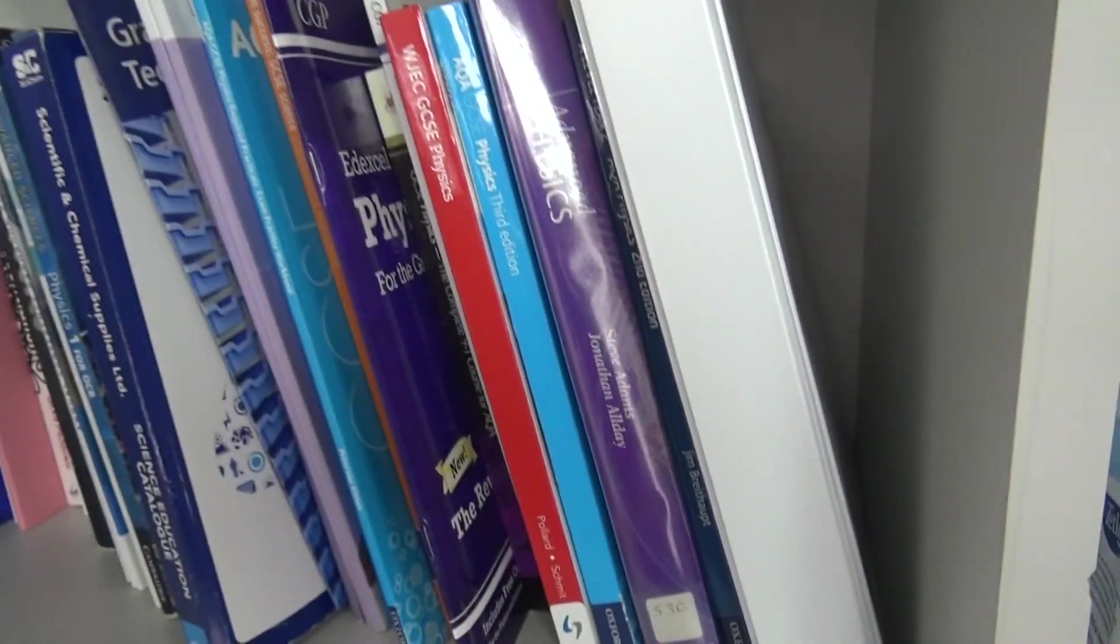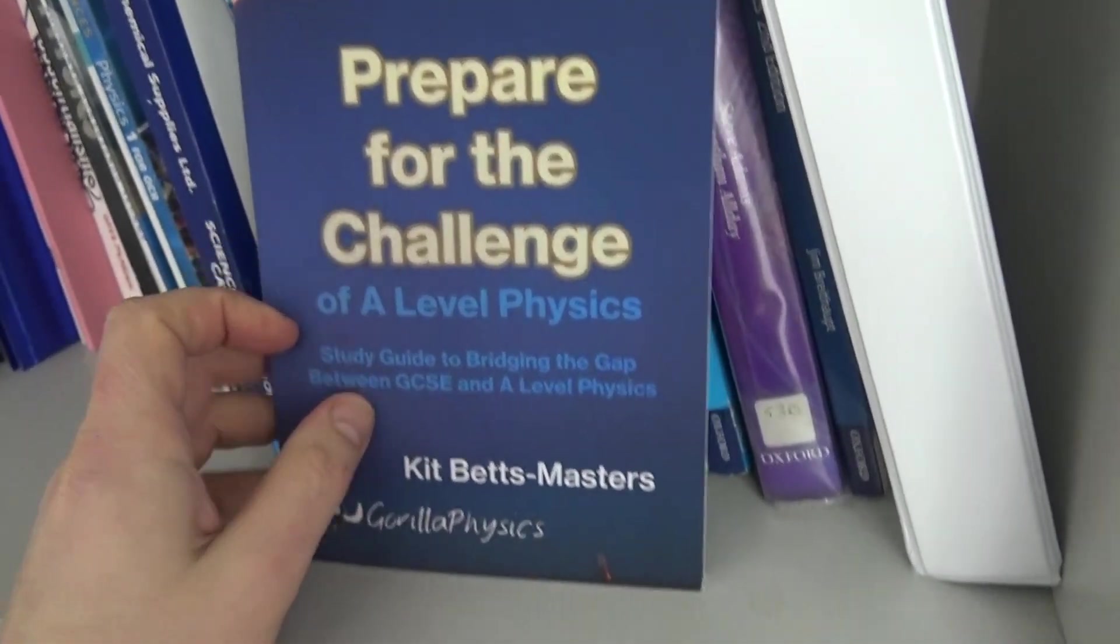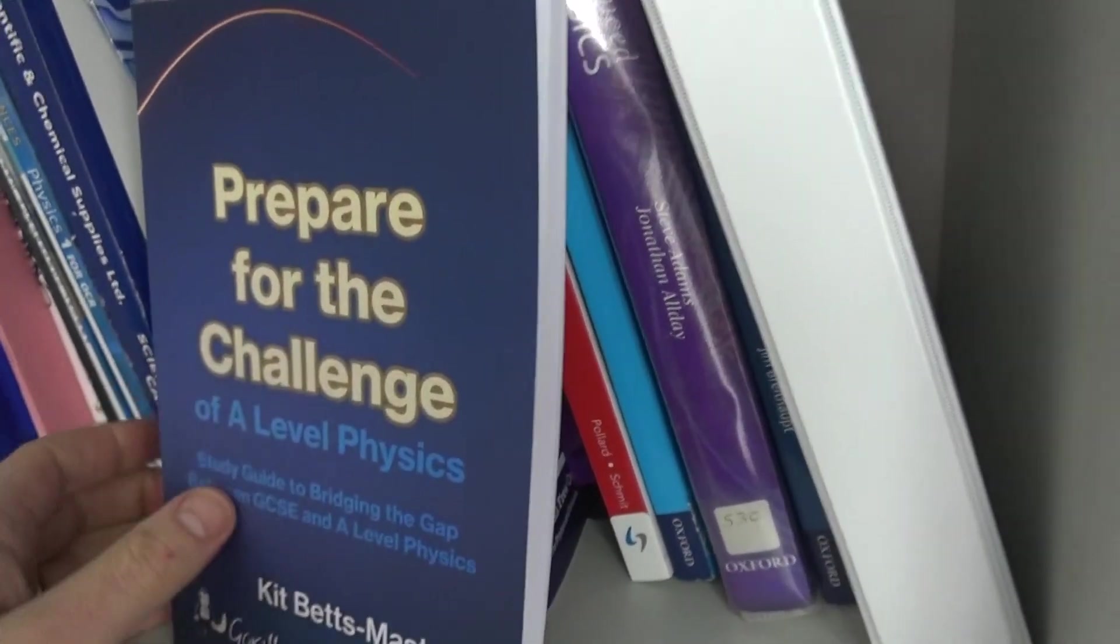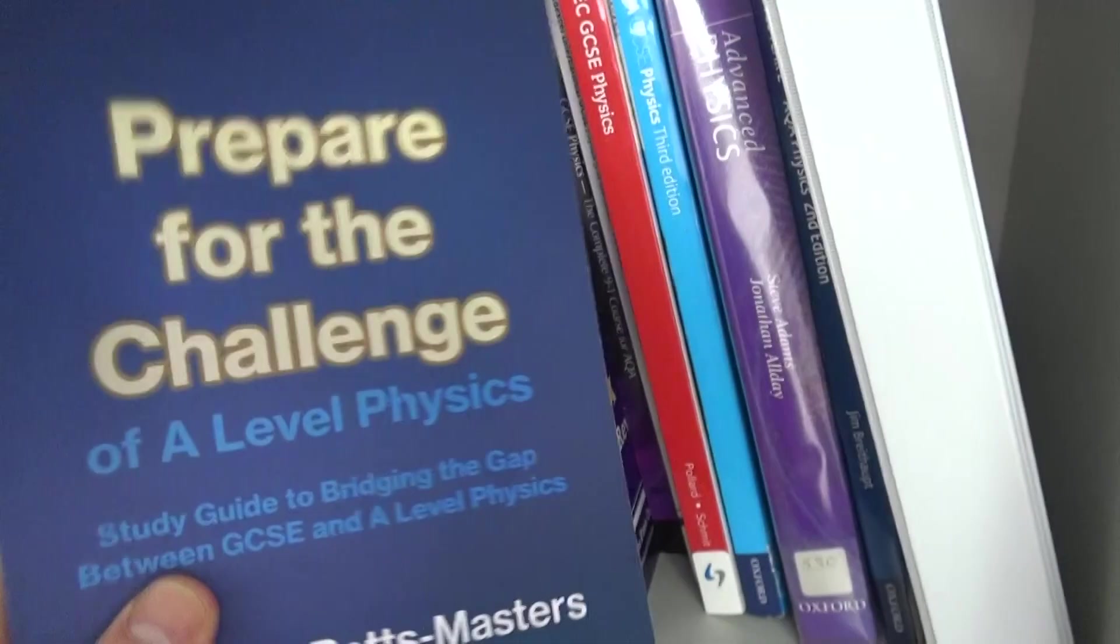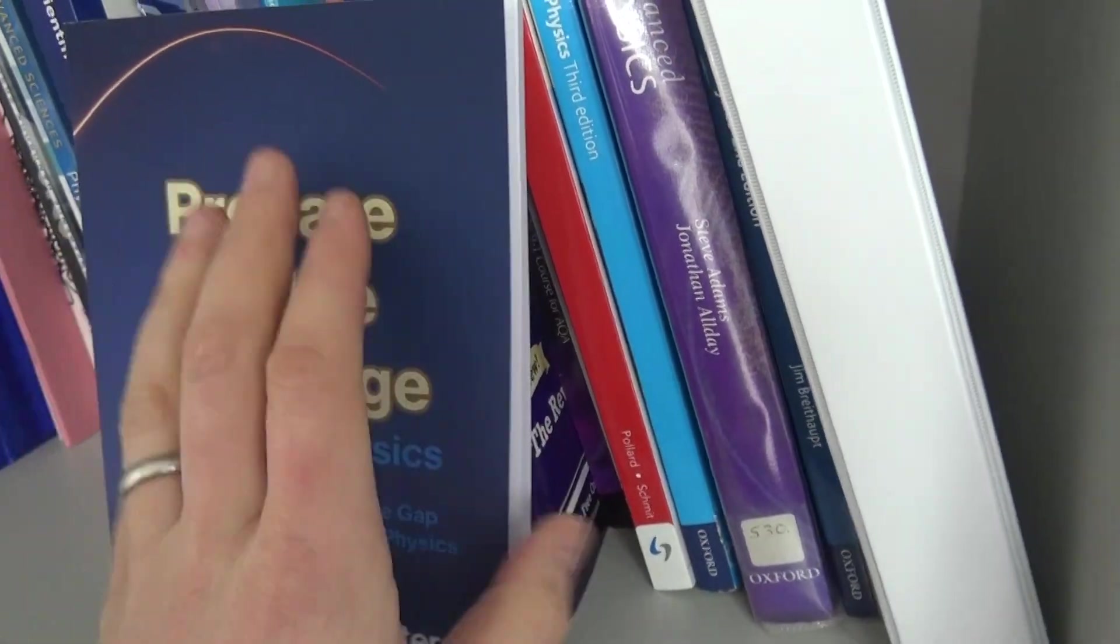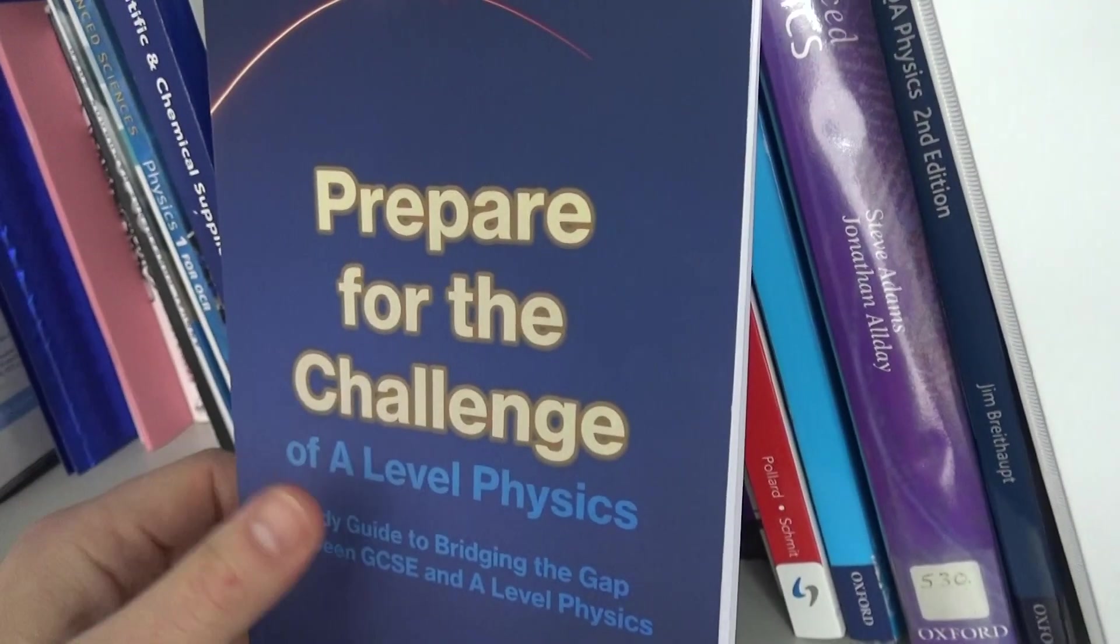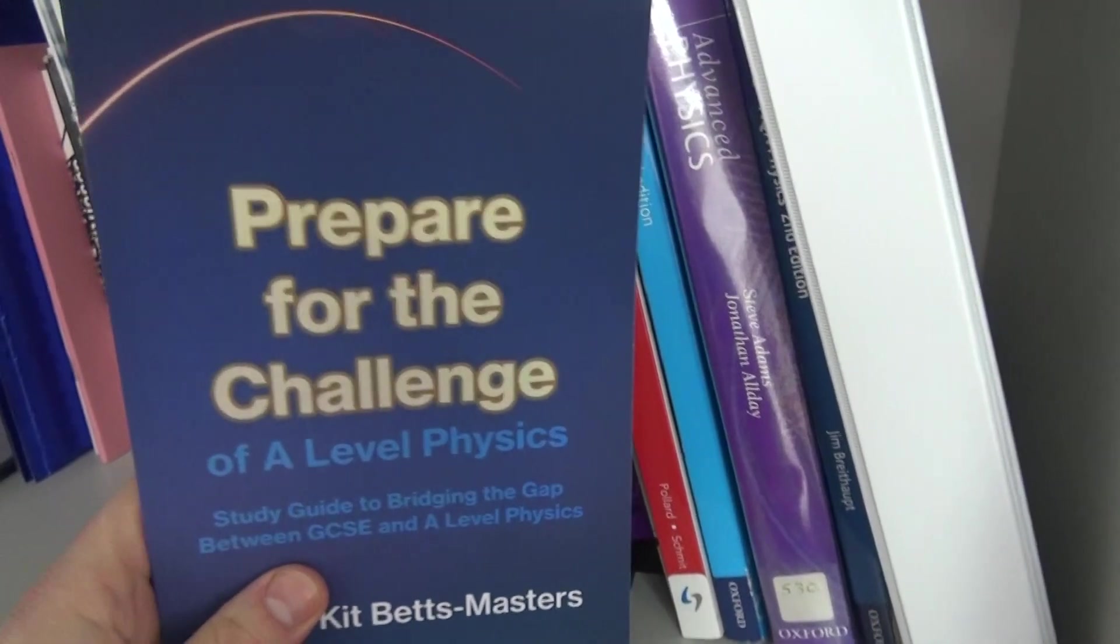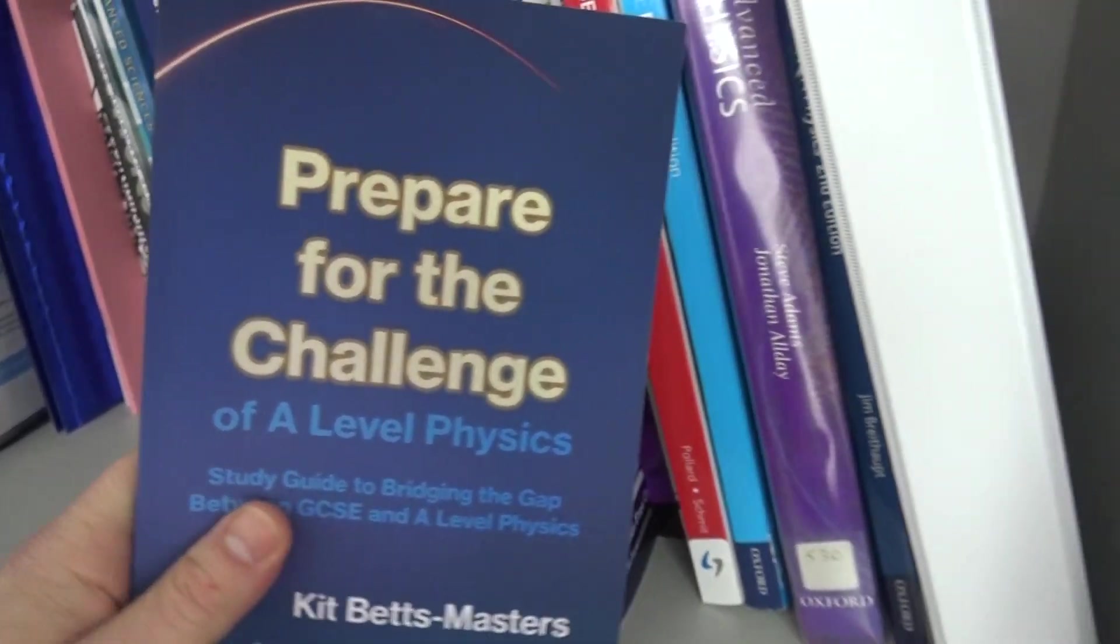Something else which has been self-published recently is this book over here by Guerrilla Physics, Kit Betts-Masters. This one here is definitely worth it. You can get a digital download. I bought the hard copy because I just like reading books. I can take them anywhere. This one over here is brilliant if you're maybe thinking about doing A-level physics next year if you're currently doing GCSE, or even if you are doing A-level physics.